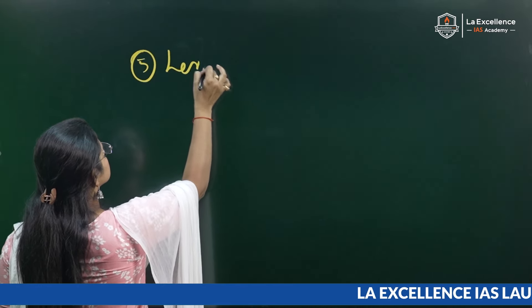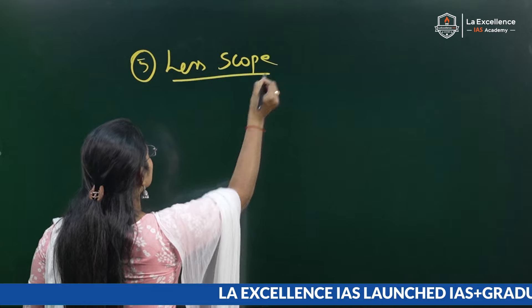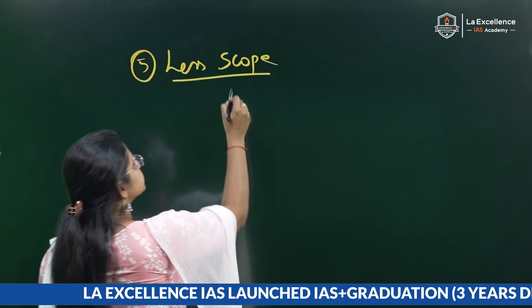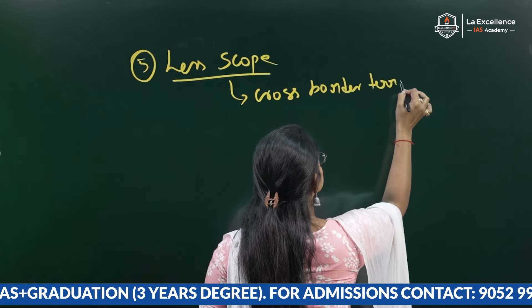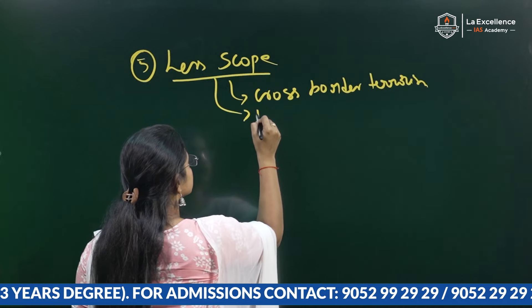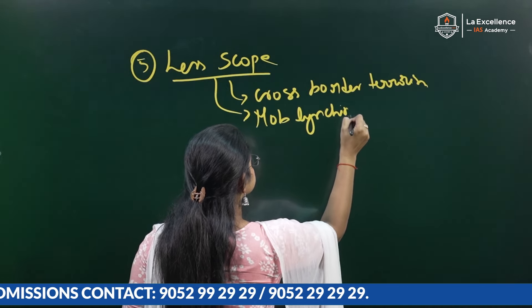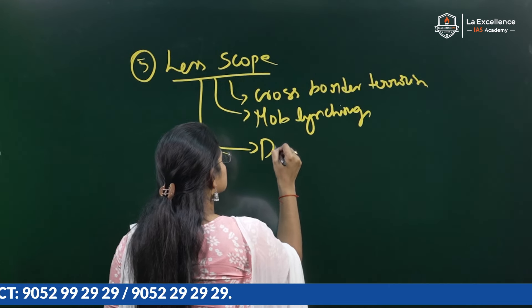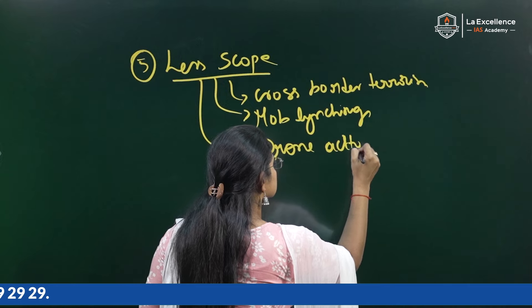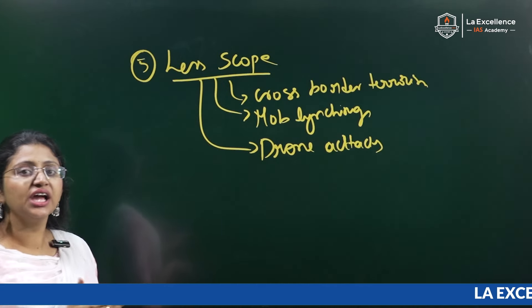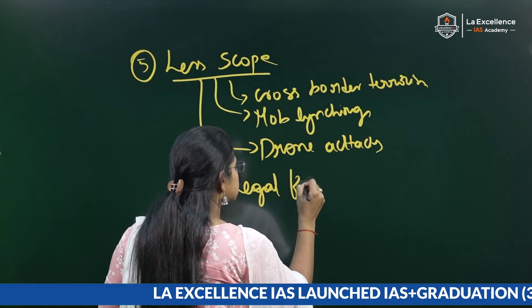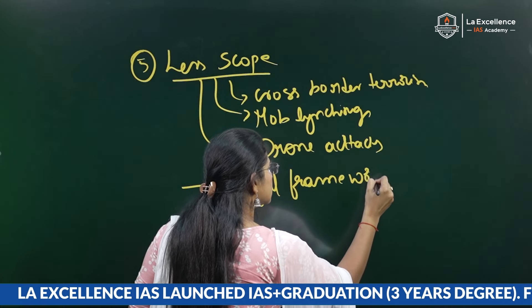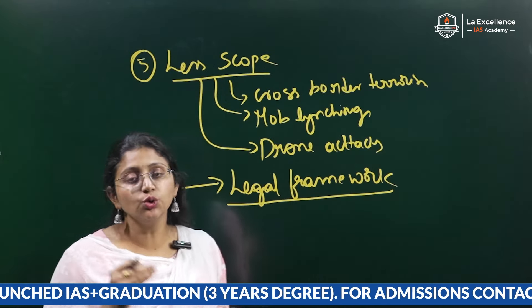Another reason is the less scope of the existing laws. Not only crypto crimes, but also cross-border terrorism, mob lynchings, and drone attacks — the nature of attacks is changing and becoming more and more complex. So we need a legal framework to fight against these. These are the reasons we need new laws. Let us look at the key highlights of each bill.